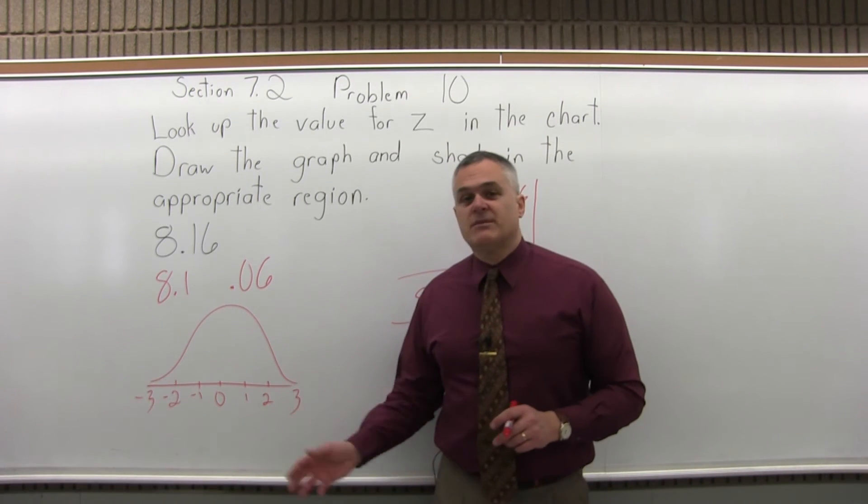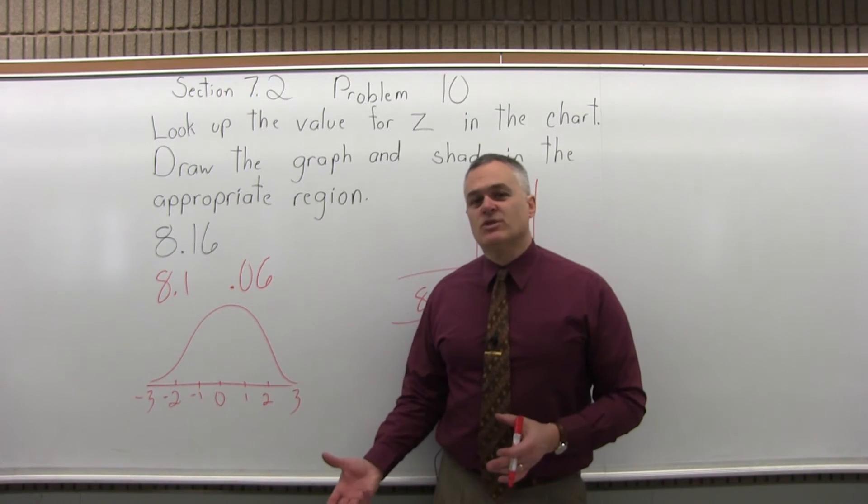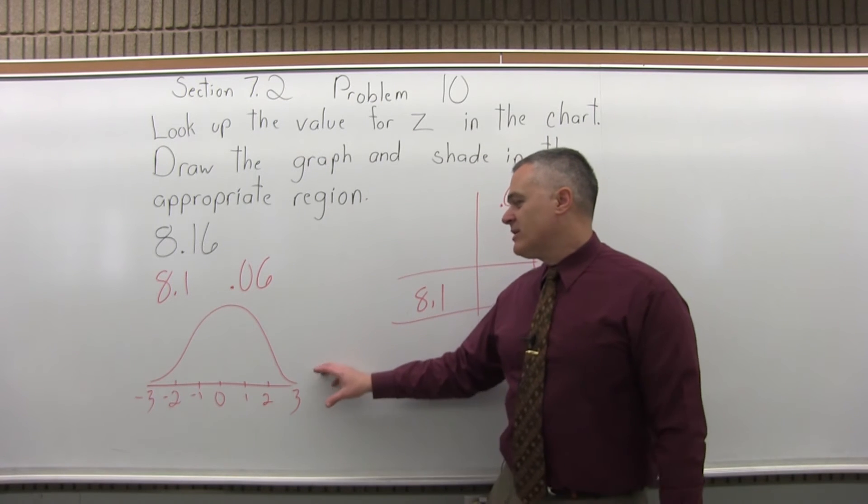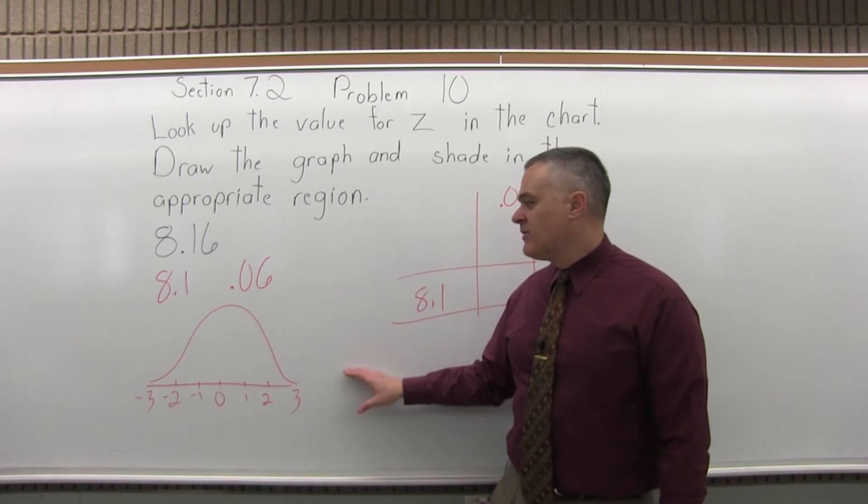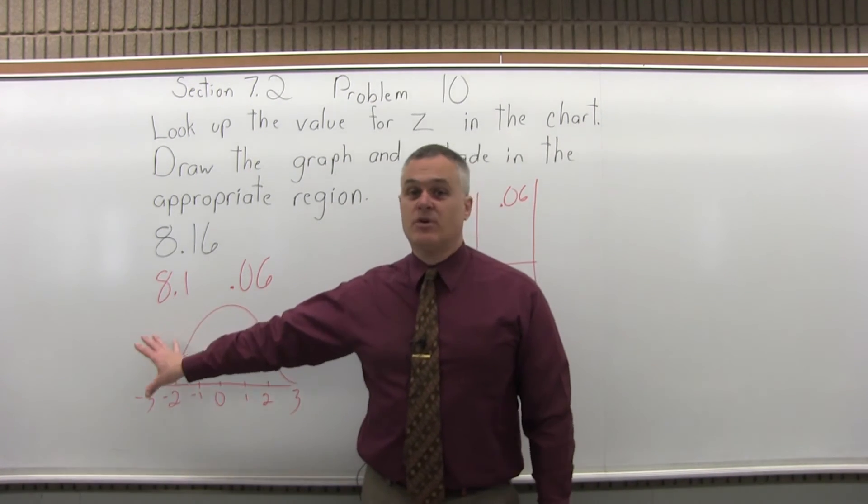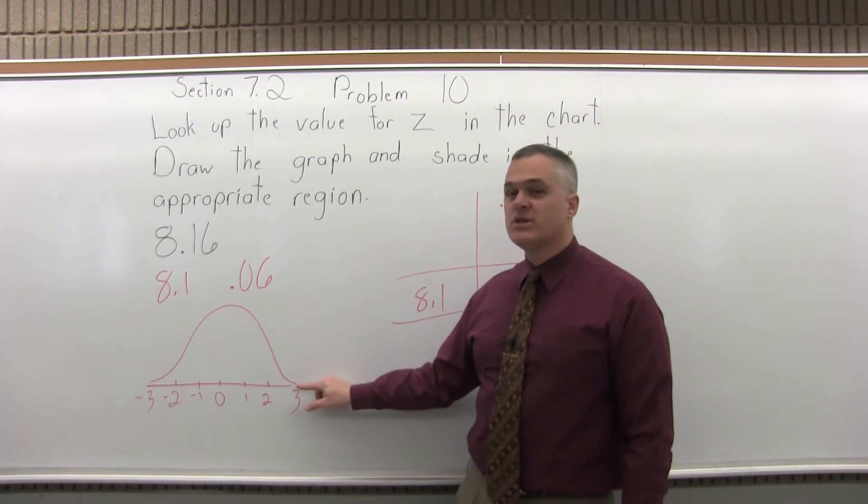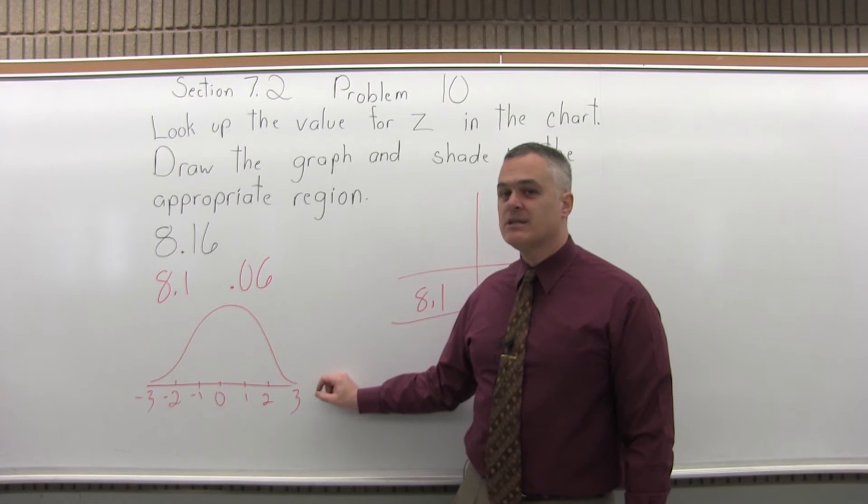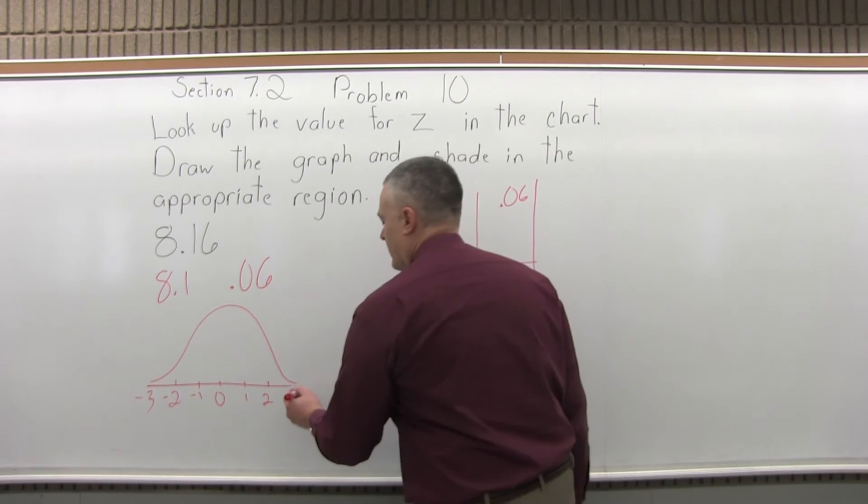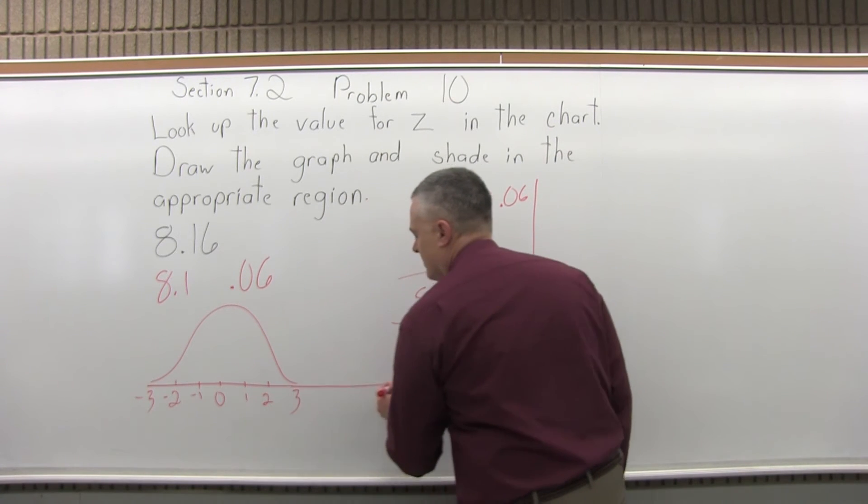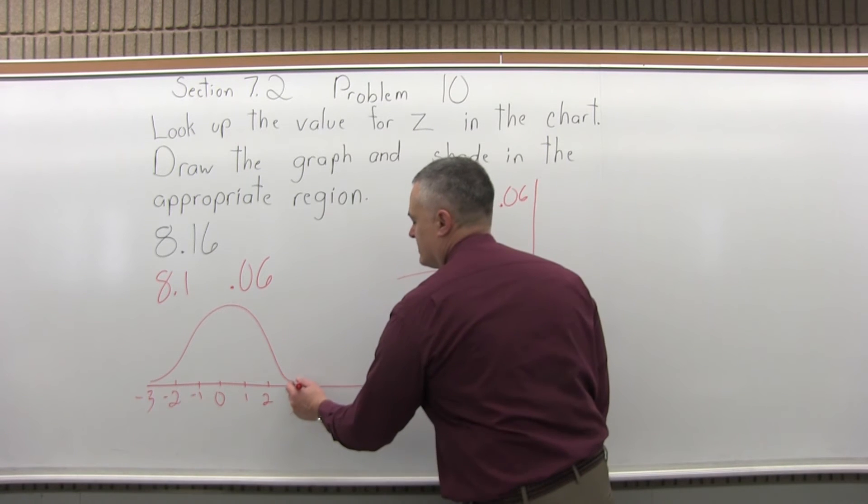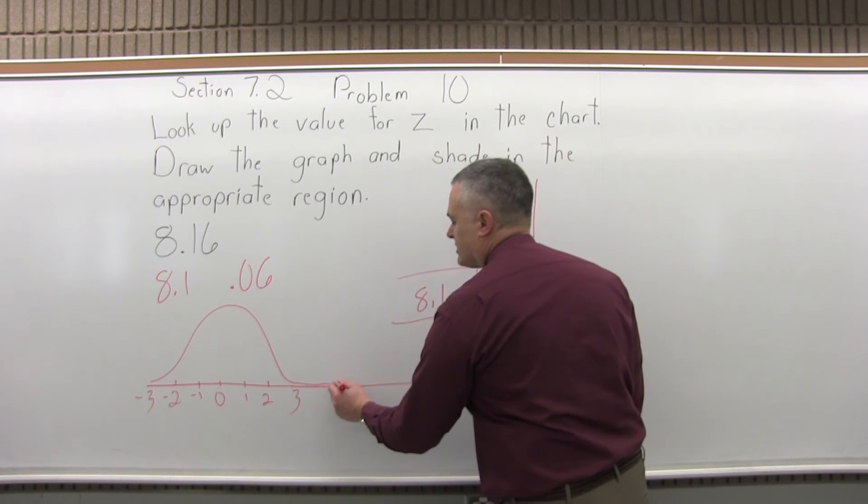I've mentioned a couple of times the chart doesn't really end when you stop drawing it. In reality the graph, that bell curve, goes forever in both directions. The bell curve gets closer and closer to the horizontal line underneath it, and it never quite gets there. So in reality it continues forever in both directions.